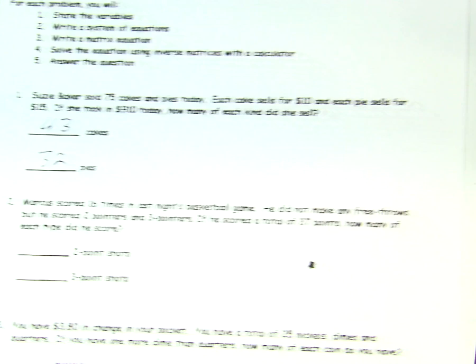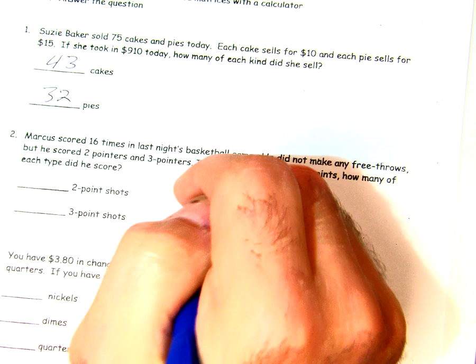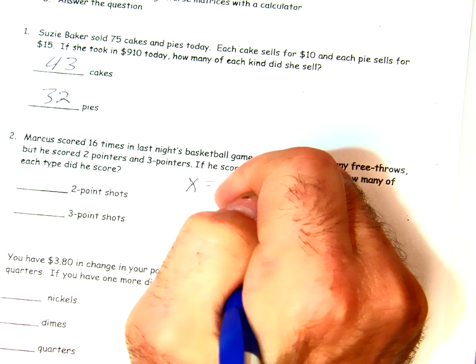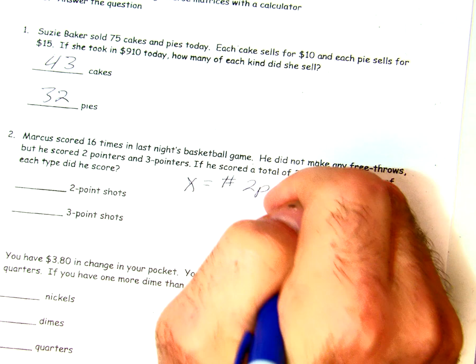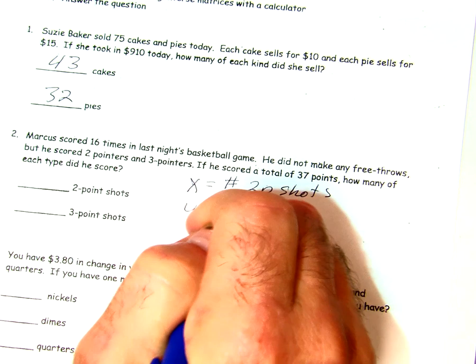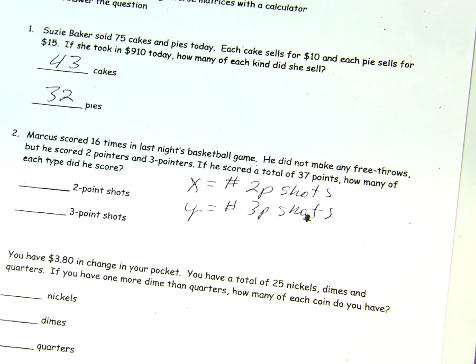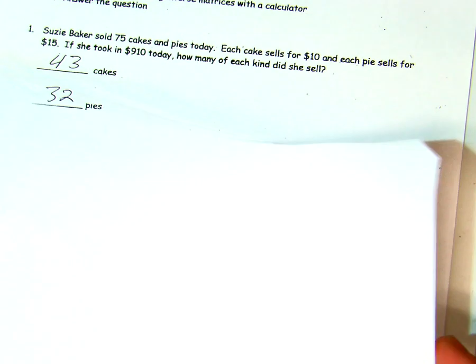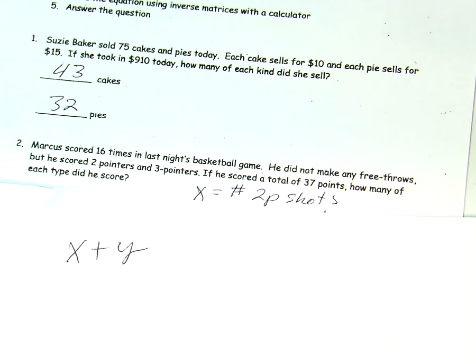Let's go to the next problem. Marcus scored 16 times in last night's basketball game. So let's define our variables again. X, this time, will equal the number of two-point shots. And y will equal the number of three-point shots. So, he made a total of 16 shots. So, x plus y equals 16.